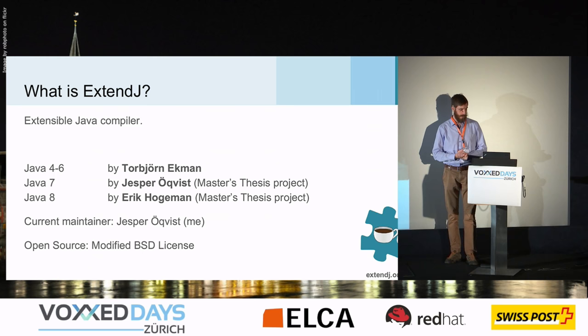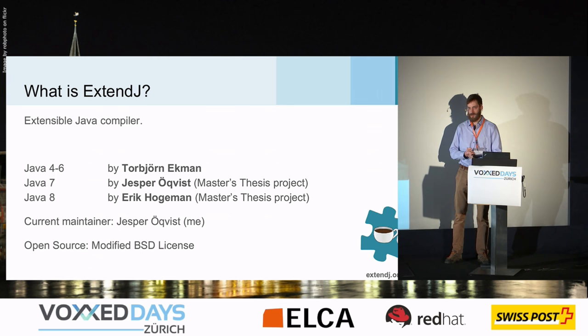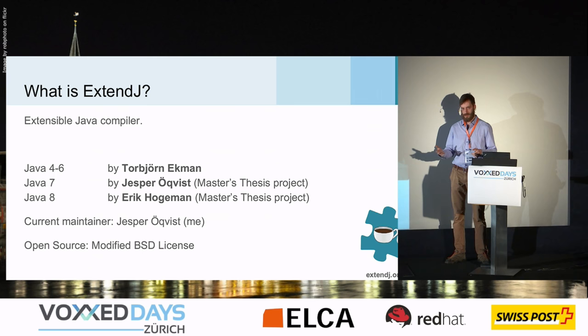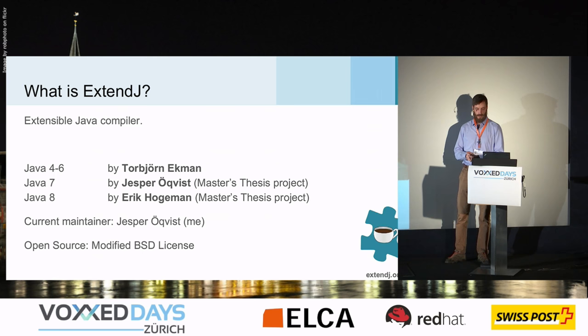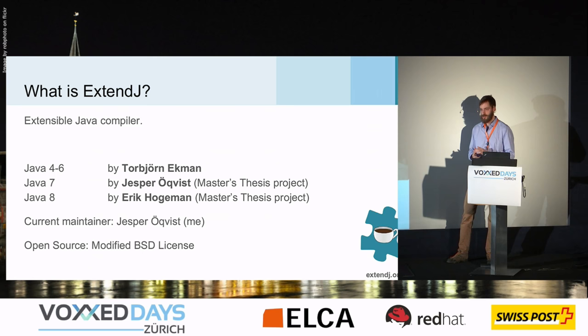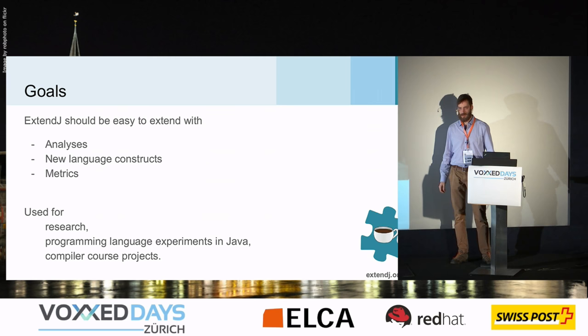So what is ExtendJ? Well, it's an extensible Java compiler, and it's a research compiler that was developed at my university. The first version was developed by Torbjörn Ekman, and I made the Java 7 extension, and the Java 8 support was added by a master's student named Erik Hogeman. One interesting thing is that each Java version we add as an extension upon the previous Java version. The compiler is open source, and I am the current maintainer.